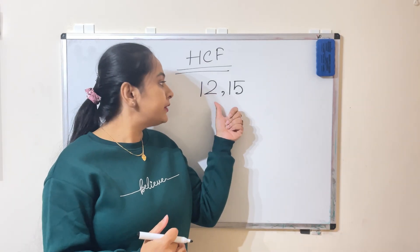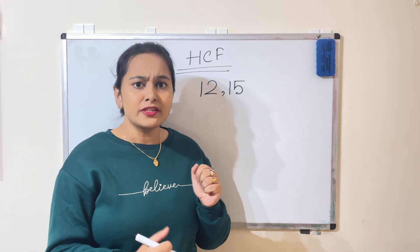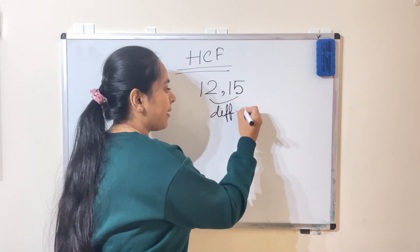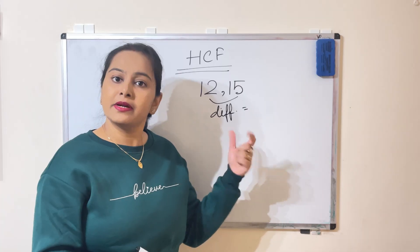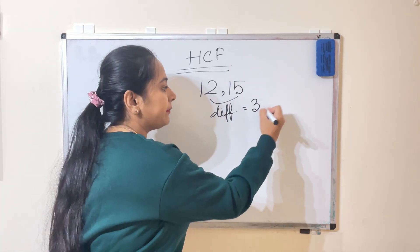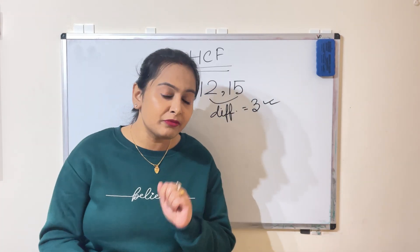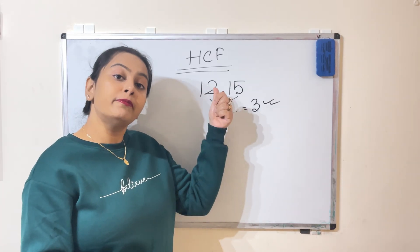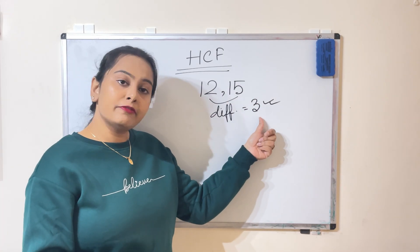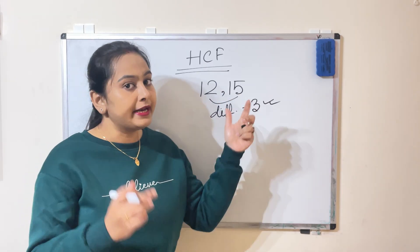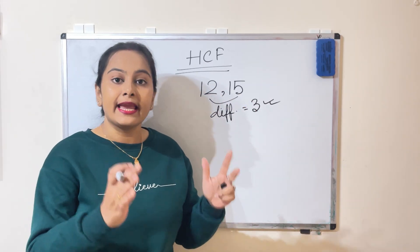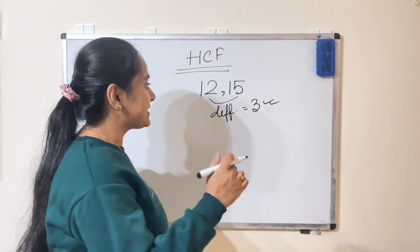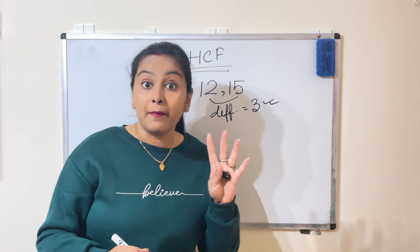Here is our first example: we have to find the HCF of 12 and 15. We just have to find the difference between these numbers, which is 3. But you need to check one thing — that the difference is a factor of both numbers. 3 is a factor of both 12 and 15, so 3 is the HCF of 12 and 15. It's very easy.